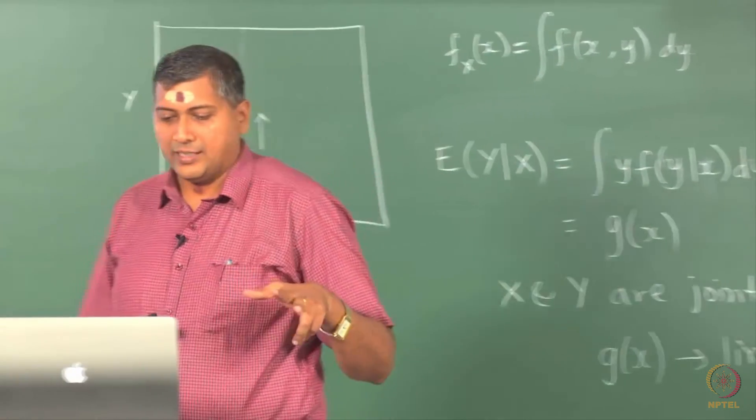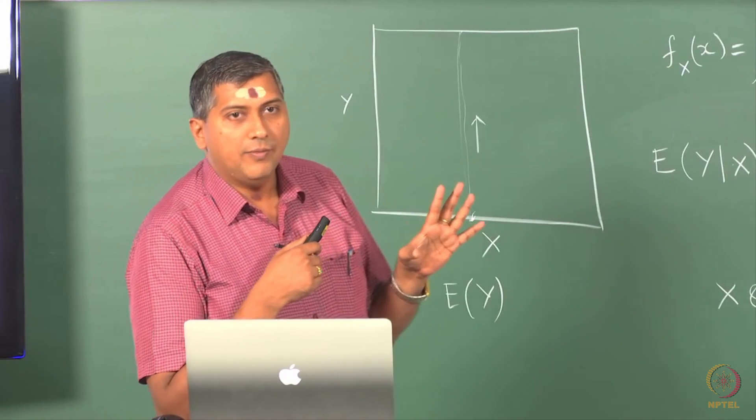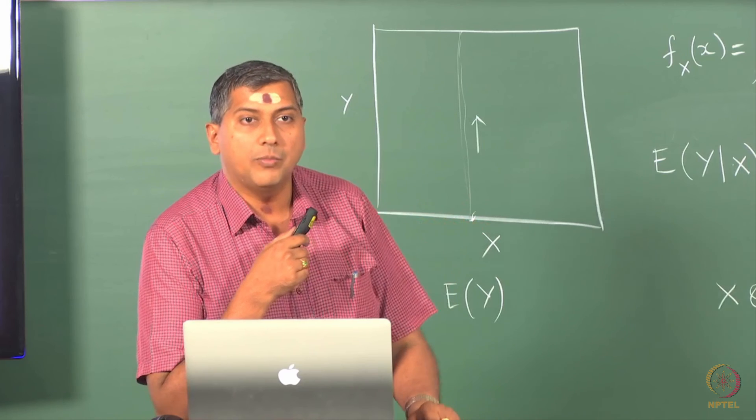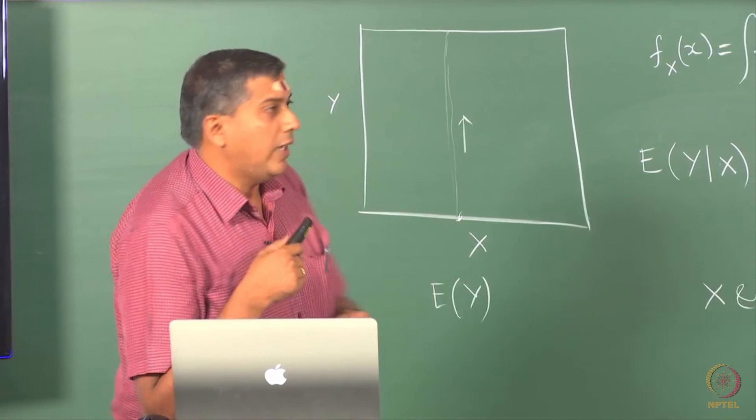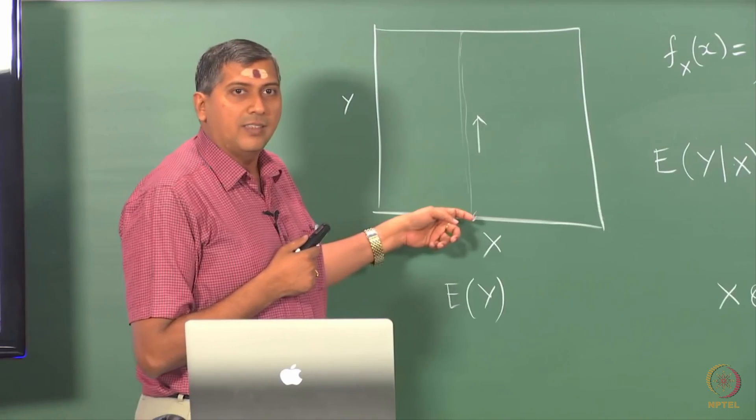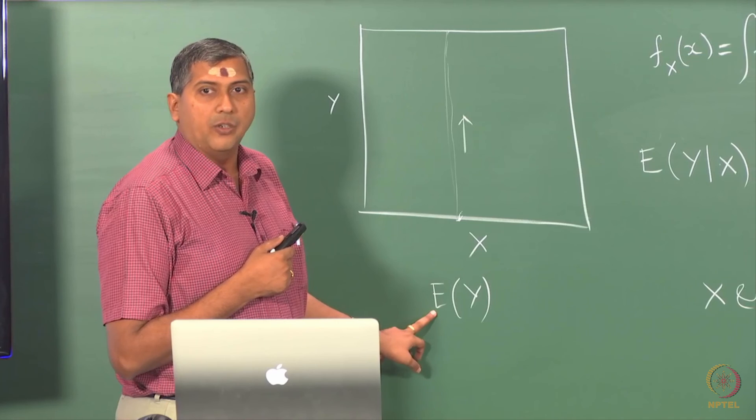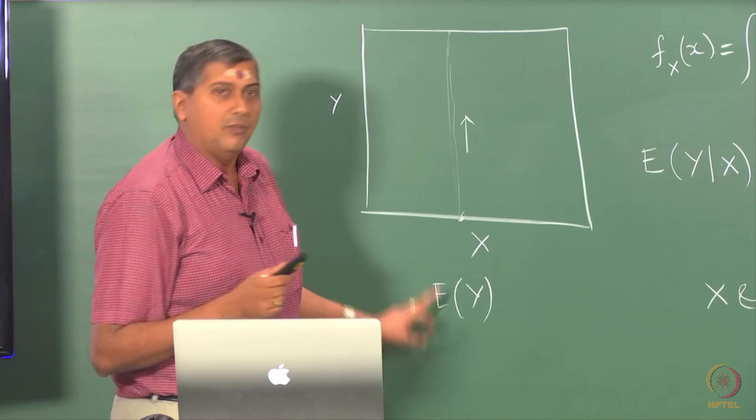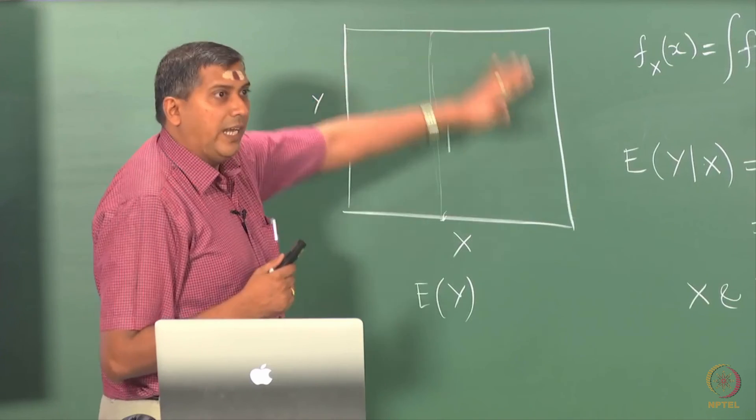You have 2 layers of expectations there. One expectation, which is the inner one, is being evaluated in the outcome space of y. That means I have walked along this direction at a given value of x. What I need is the unconditional expectation of y, which means regardless of the values that x takes, which means that I have to be able to evaluate along the entire 2D plane.